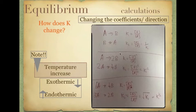So that's what happens when you change the coefficients or the direction of your reaction. To summarise: reversing the direction gives the inverse of K; doubling the coefficients squares K; halving the coefficients gives the square root of K.